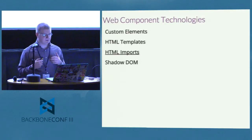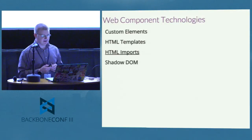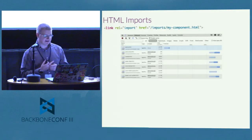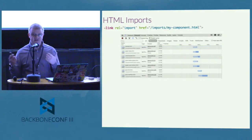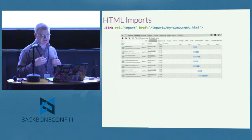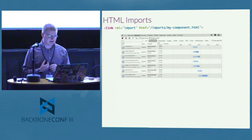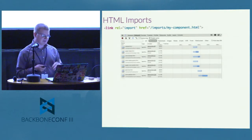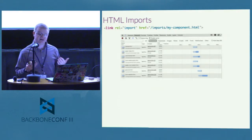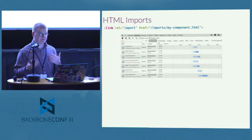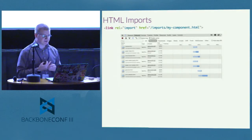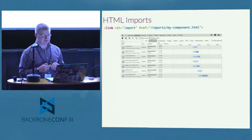The next web components technology is HTML imports — the ability to import documents into our application with a link tag. No longer are link tags just for CSS; we can use them to pull in HTML documents directly. This animation shows the documents filter in Chrome DevTools. You'll notice a whole bunch of documents — normally you'd only see one. We can pull in different HTML documents through the browser's native mechanisms, following the same cross-origin request security rules you're used to.